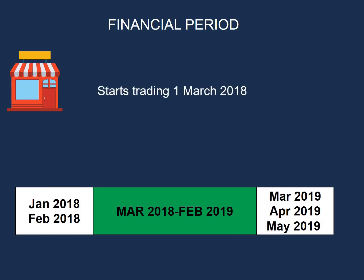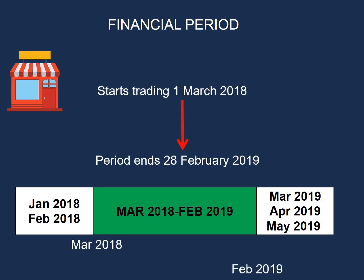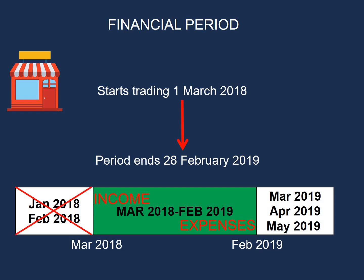Another example: a business starts trading on 1 March 2018, so its ending period will be 28 February 2019. Only income and expenses for that period — from 1 March 2018 to 28 February 2019 — are entered in the financial statements. Income and expenses for January 2018 and February 2018 will not be entered as they do not form part of the current financial period. Equally, income and expenses from March 2019 onwards will not be entered. To account for those, we make adjustments.